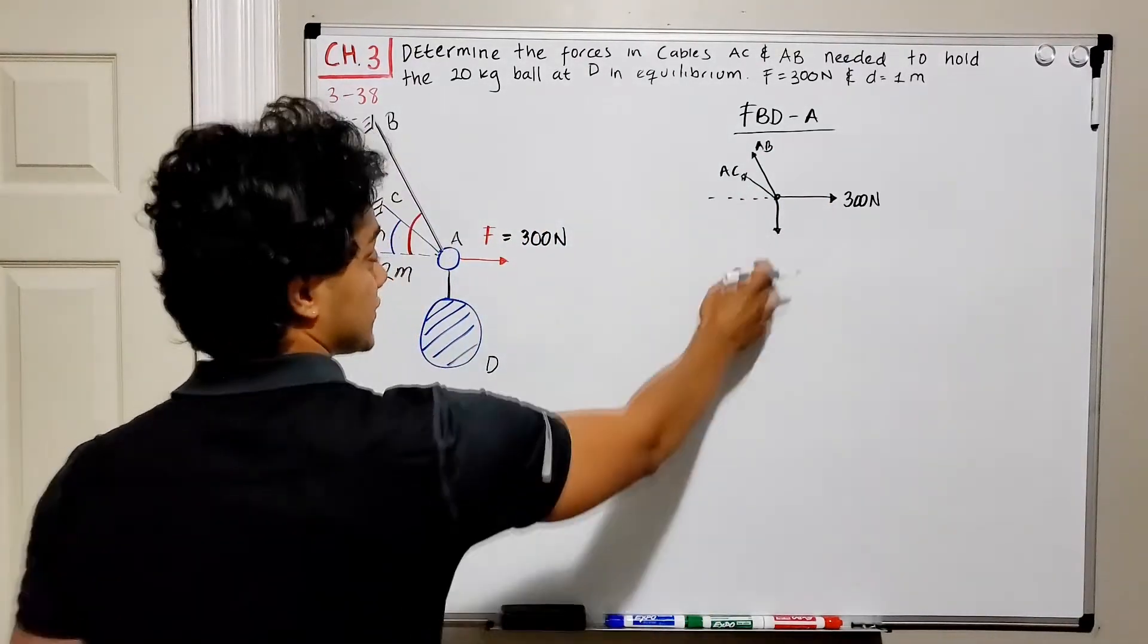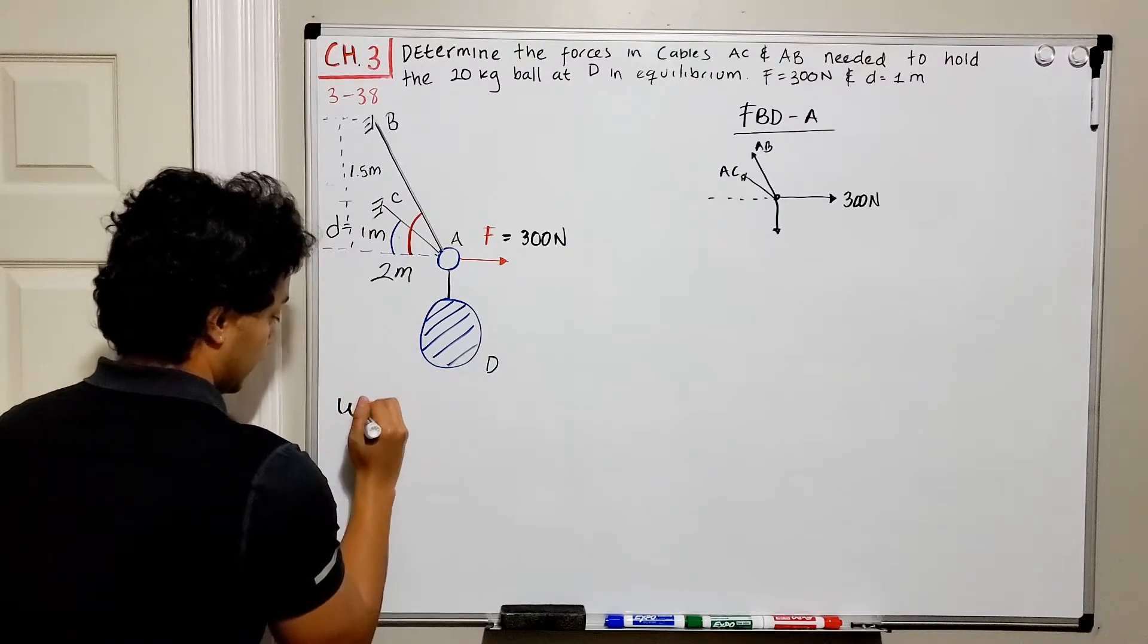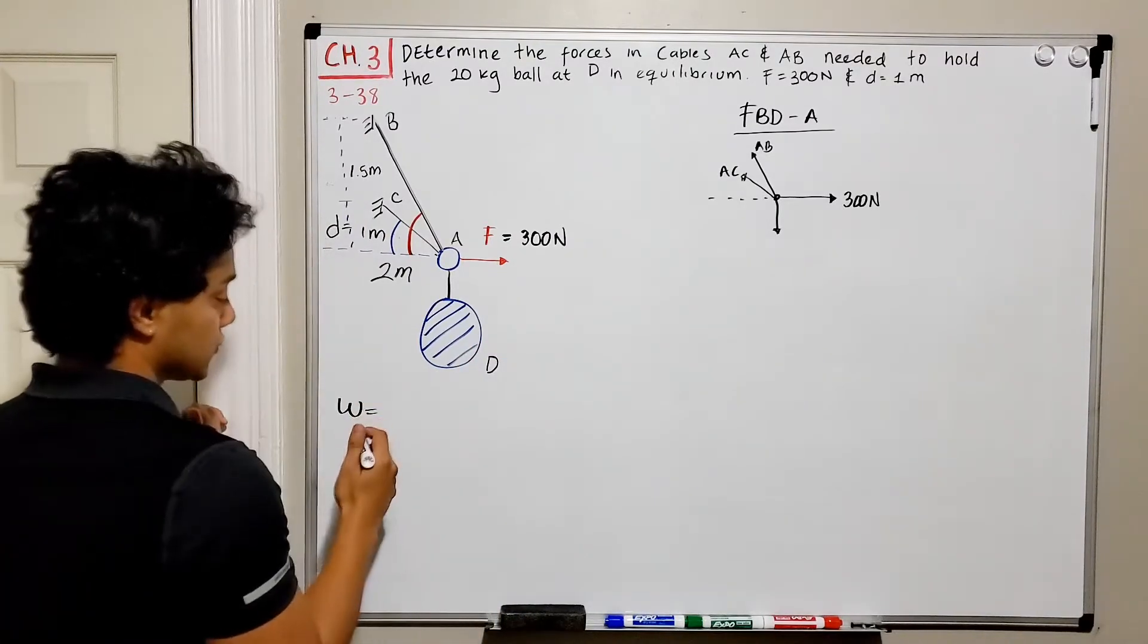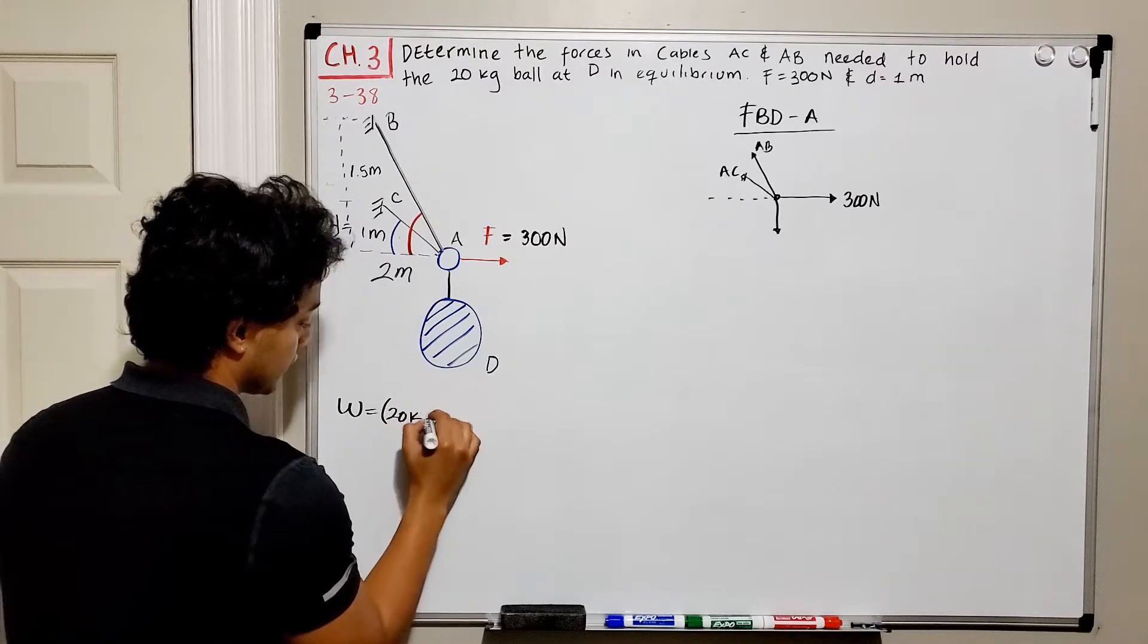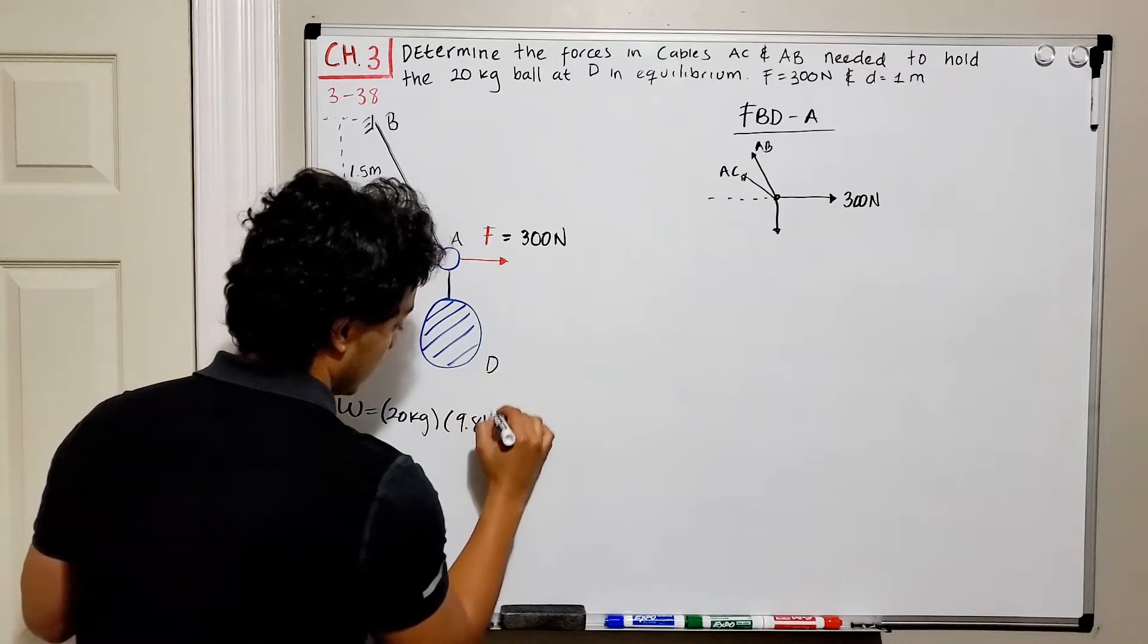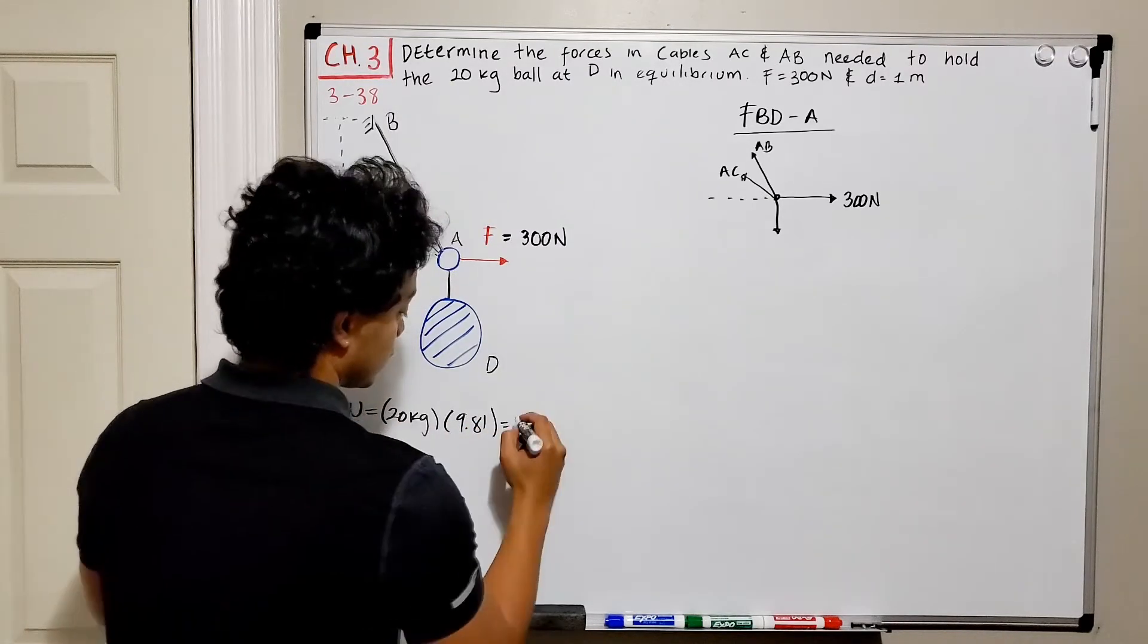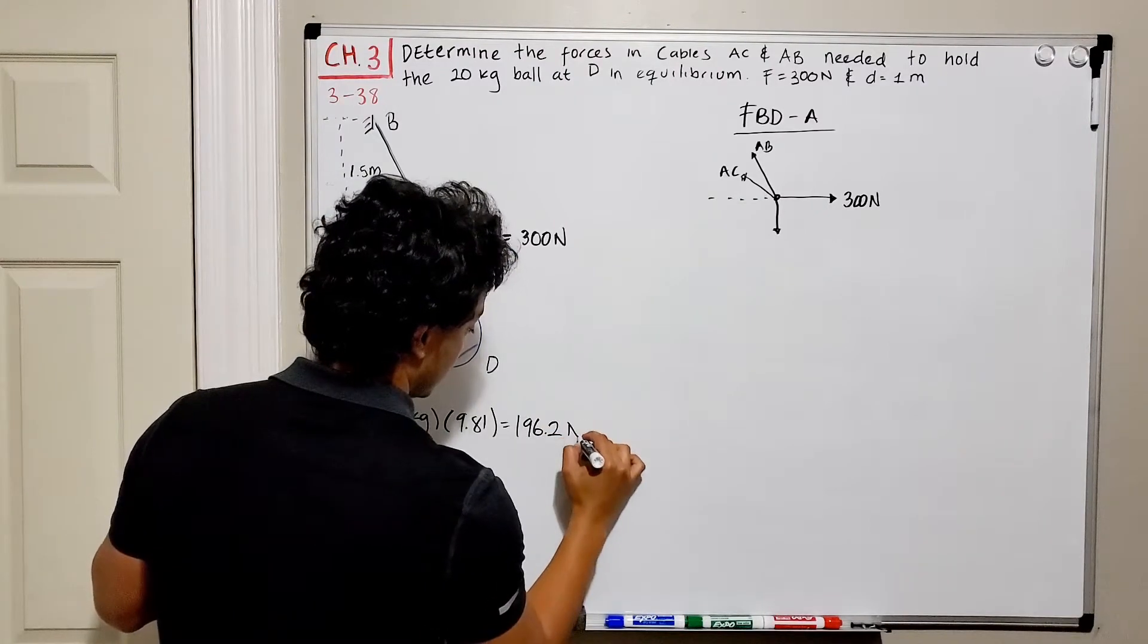Now, what is this weight going down? So we need to calculate that one. Weight is equal to mass times gravity. So we got 20 kilograms multiplied by 9.81 and this should be equal to 196.2 newtons.